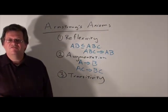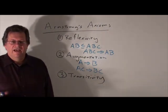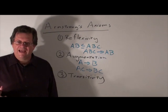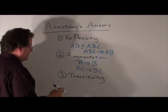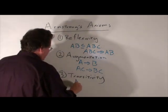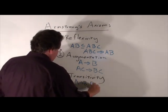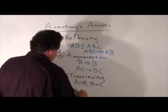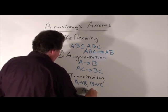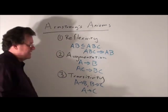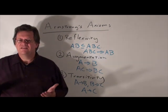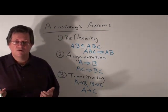The third axiom of Armstrong's Axioms is transitivity. If we have A function determines B, B function determines C, then A function determines C. So there are three axioms of Armstrong's Axioms.